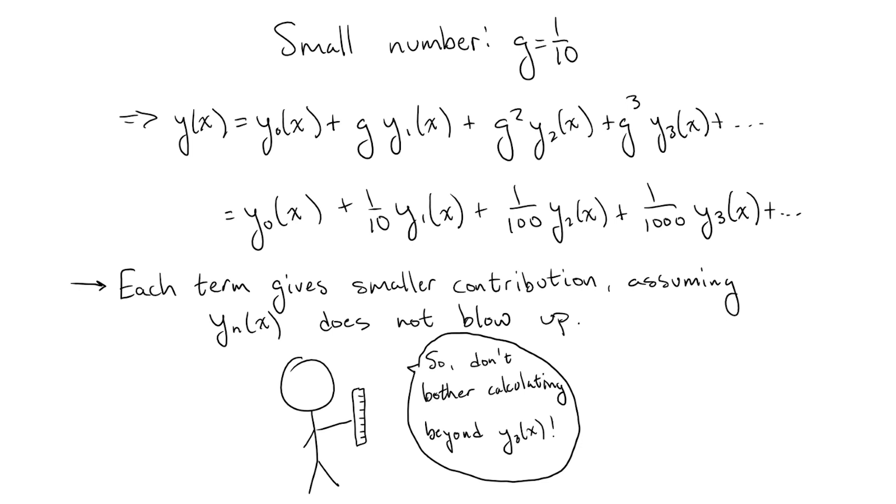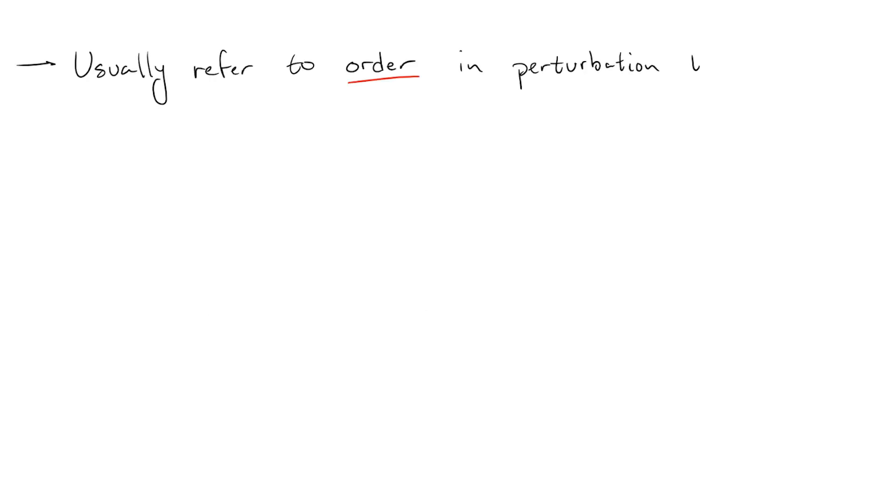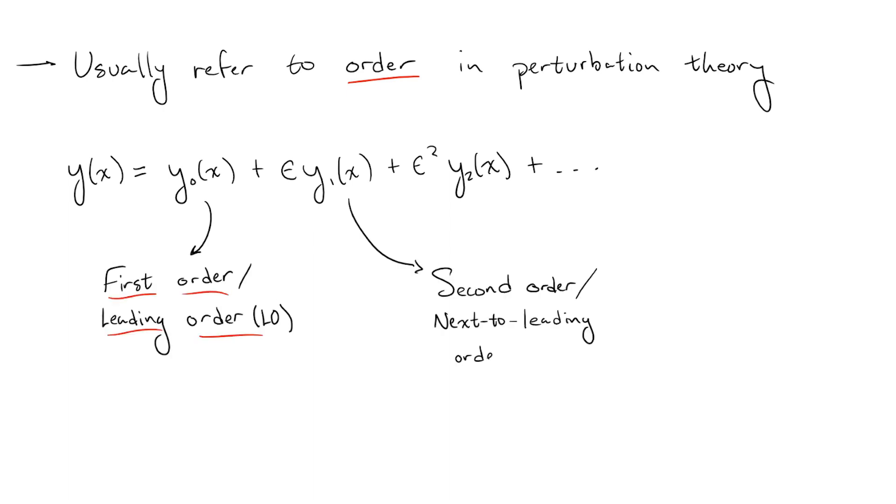As a note on language, we'll often refer to the order we are looking at in perturbation theory. All this really means is where the term we care about shows up in the sum. So, the first term will be first order or leading order, the second term will be second order or next to leading order, and so on.